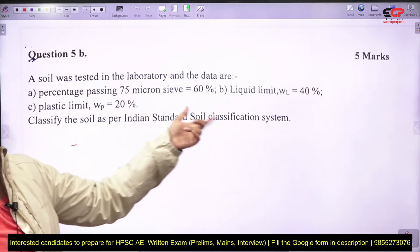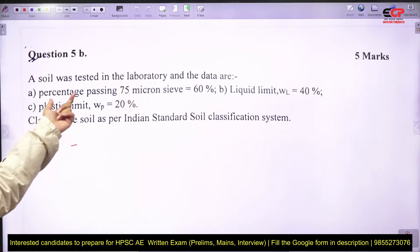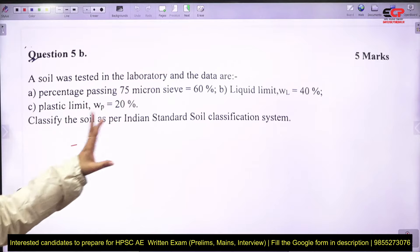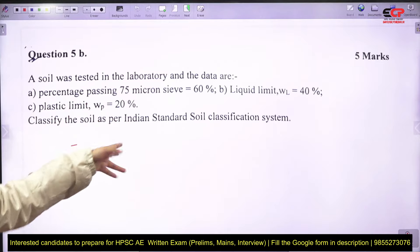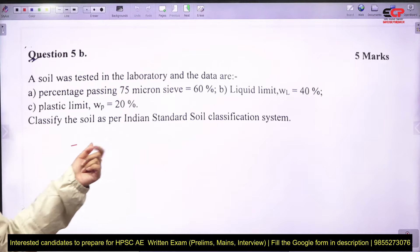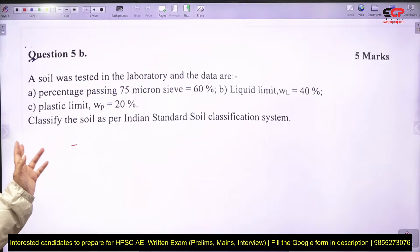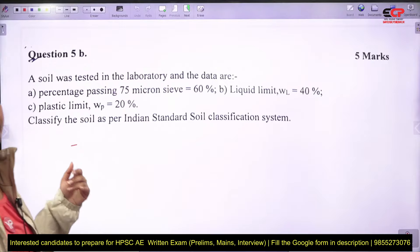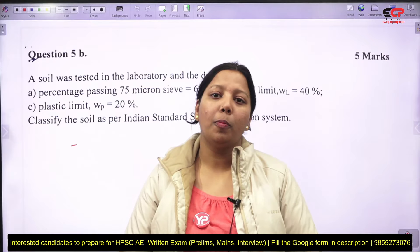First of all, this is a 5-mark question. The question is that soil was tested in the lab and data is given: percentage passing 75 micron sieve is 60%, liquid limit is 40%, and plastic limit is 20%. Classify the soil as per the Indian Standard Soil Classification System.